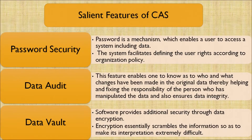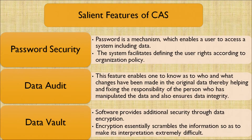What are the salient features of computer-aided systems regarding security? Number one: password security. Second: data audit. Third: data vault. Password is a mechanism that enables a user to access a system including its data. The system facilitates defining user rights according to organizational policy. Therefore, password security helps protect our data from third-party users. Data audit enables us to know who made changes to the original data, thereby fixing responsibility on the person who manipulated the data and ensuring data integrity. In case changes happen in a data log, we can know who committed the violation.